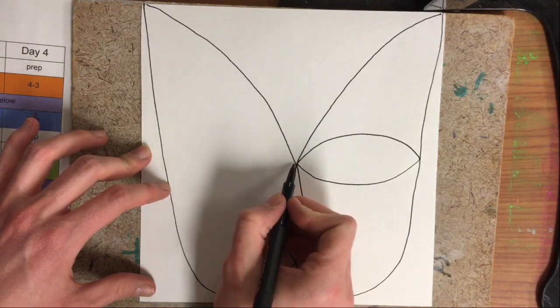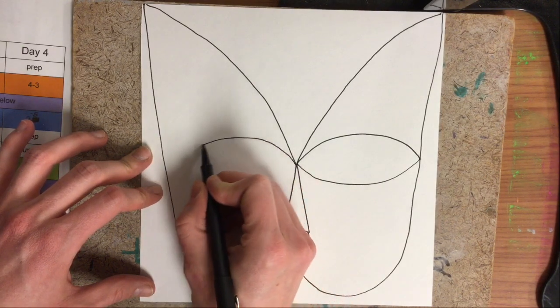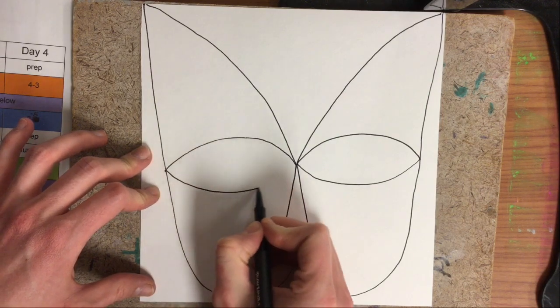We'll do the same thing on the other side. Start in the center, make a big rainbow curve to this side of the face, and then a curve all the way back.